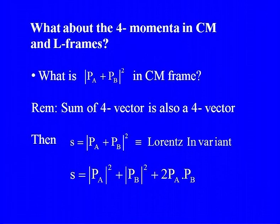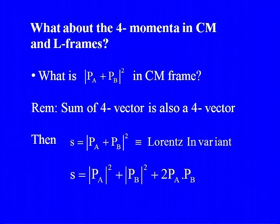So far we have used conservation of linear momentum and energy separately to find this velocity, without yet using 4-vectors. Now, let us use the conservation of 4-momentum in the lab and centre-of-mass systems. We add the 4-momenta of particles A and B and take the norm in the centre-of-mass system. The sum of two 4-vectors is also a 4-vector, so its norm — let us call it small s — is Lorentz invariant.